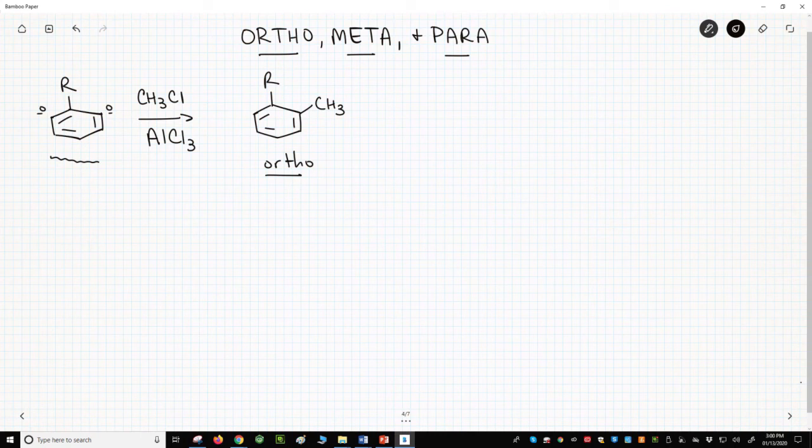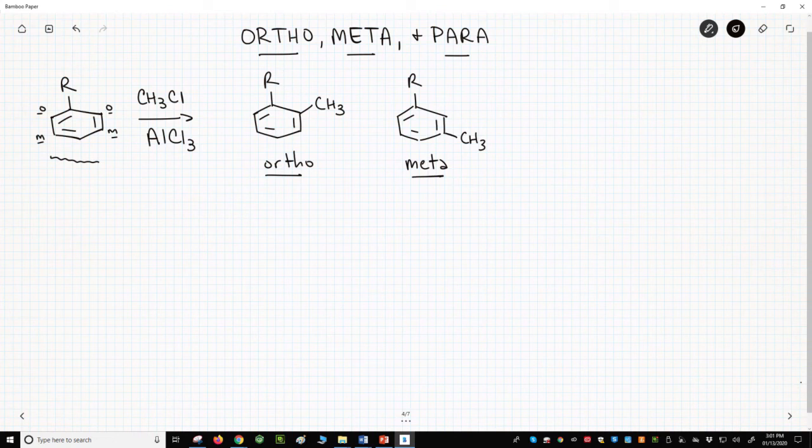The methyl group could go another position, one carbon over. That would be the meta product, also italicized. There are two carbons that are meta relative to the R group.